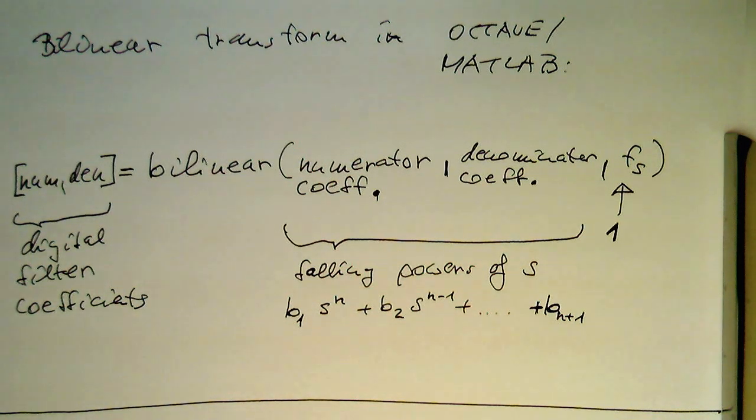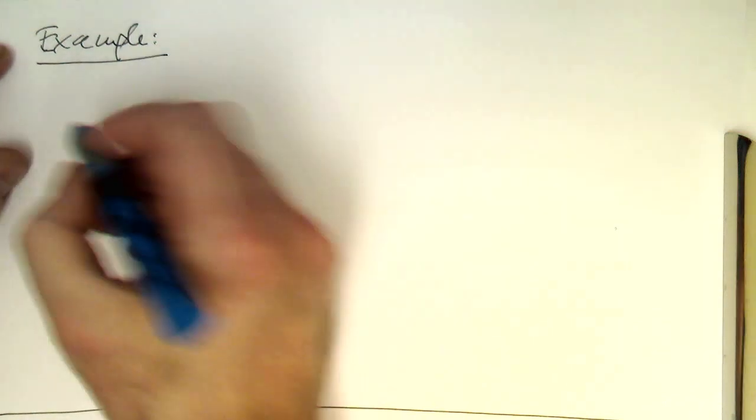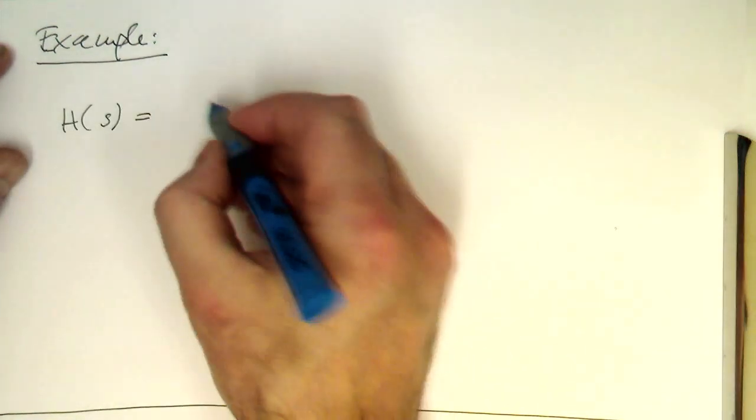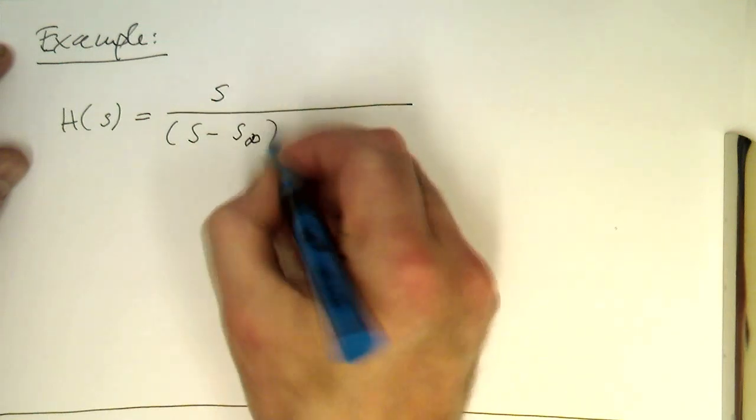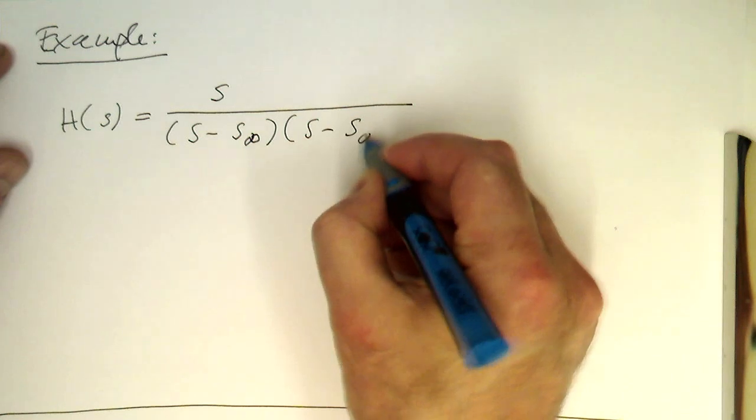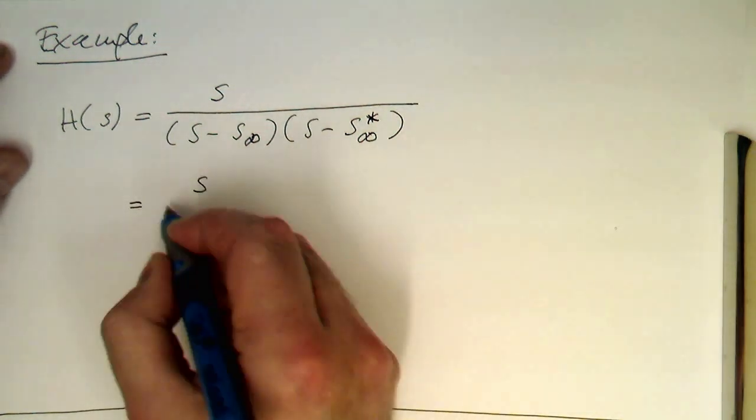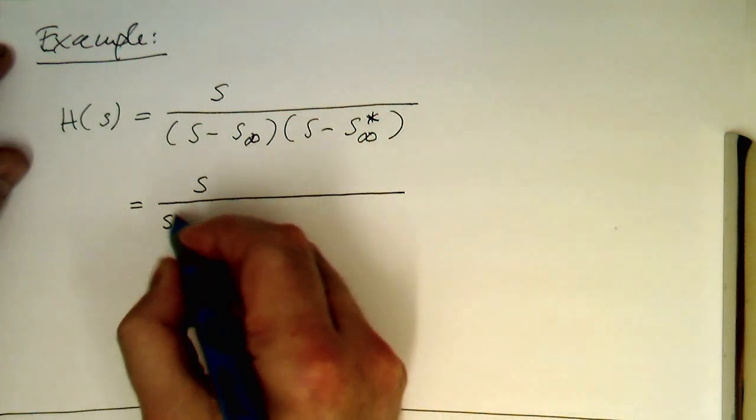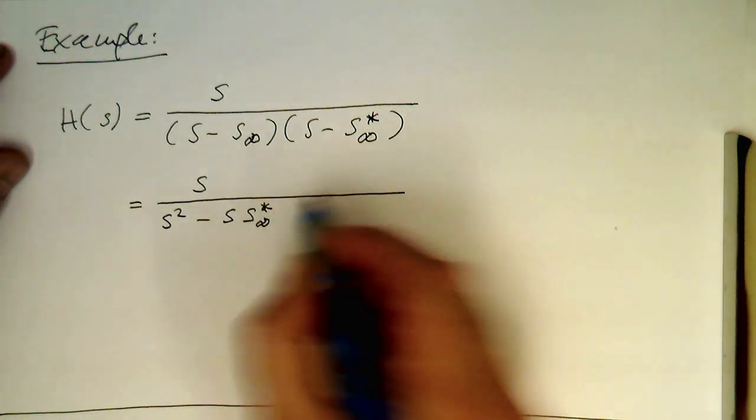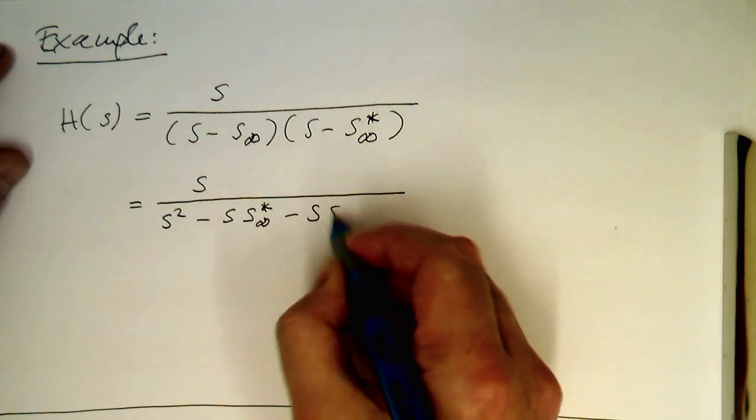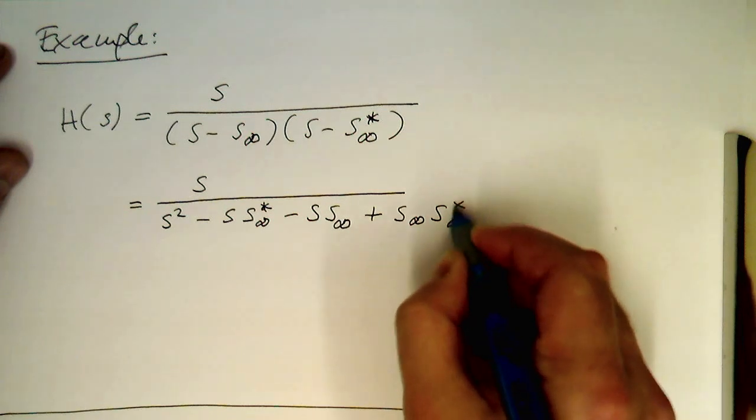And so therefore as an example, let's take again our band pass transfer function here from our resonator. So s minus s infinity and s minus s infinity star. So if we multiply this out, so we need to get now the powers of s here in this case. So we've got s square, and then minus s s infinity and s infinity star, and then we've got s s infinity.